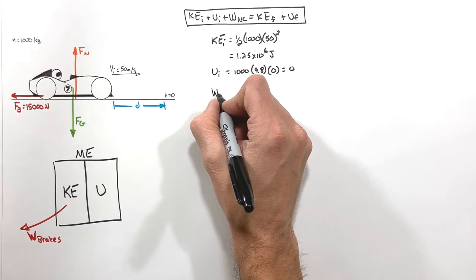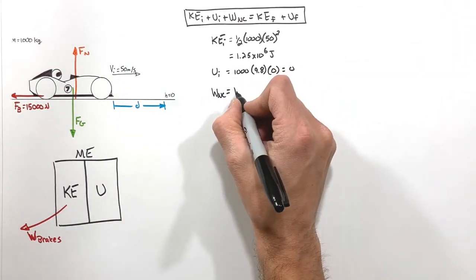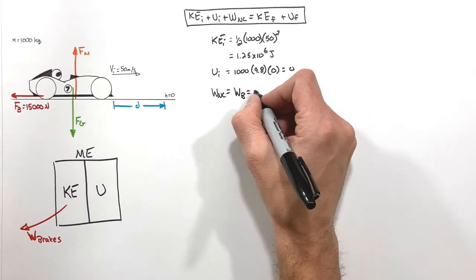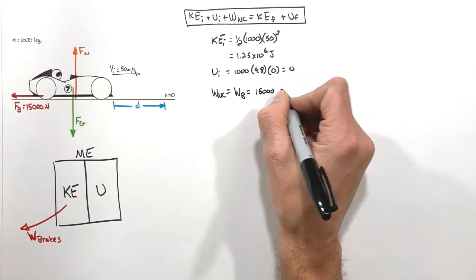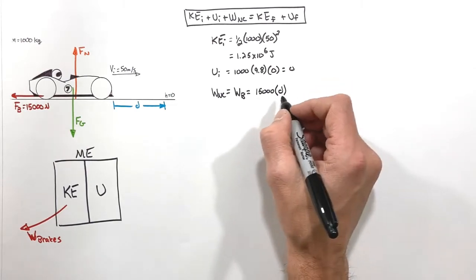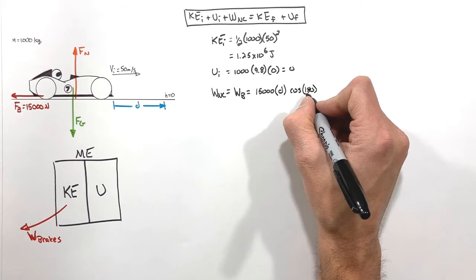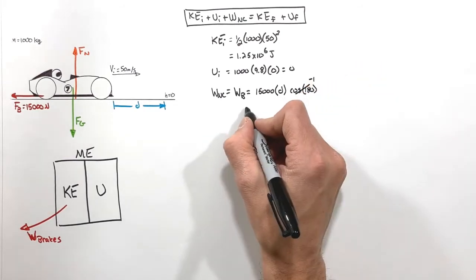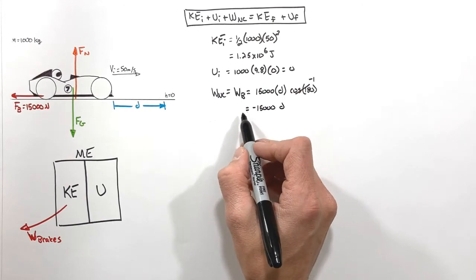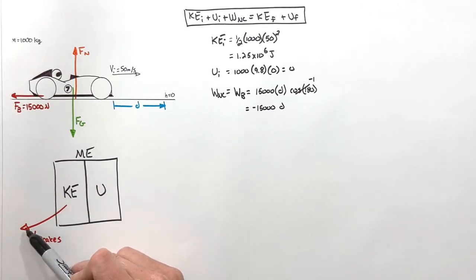For the non-conservative work, the only thing doing non-conservative work is the brakes. The work by the brakes equals the force (15,000 N) multiplied by the displacement D, times the cosine of the angle between the force backwards and the displacement forward — that's 180°. The cosine of 180° is negative one, so this gives us negative 15,000D. The work by the brakes is negative, which makes sense because we're taking energy away from the car.